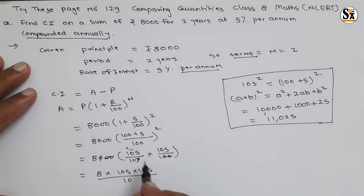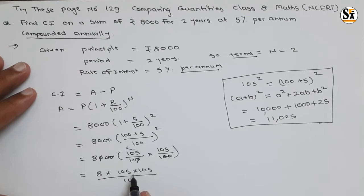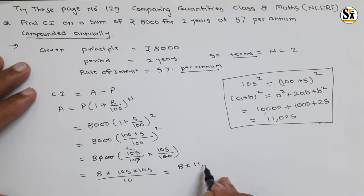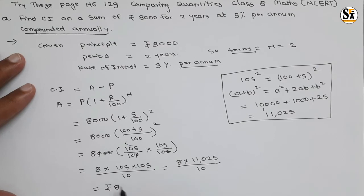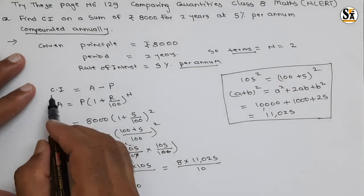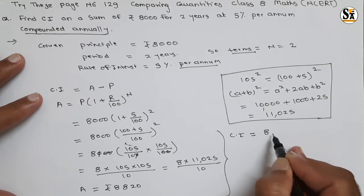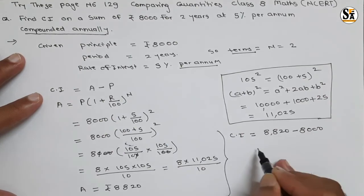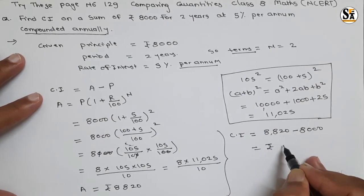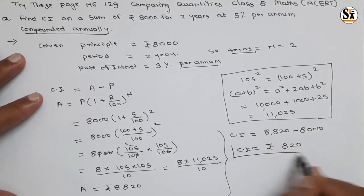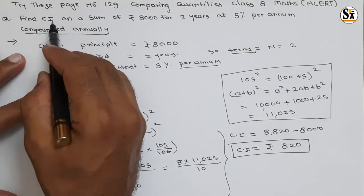So further solving: 8 × 11,025 divided by 10 gives rupees 8,820. This is the total amount. Compound interest equals total amount minus principal: 8,820 minus 8,000 equals rupees 820. So this is the answer — the compound interest is rupees 820.